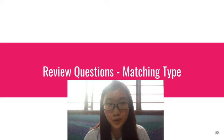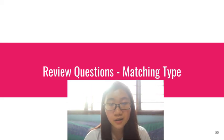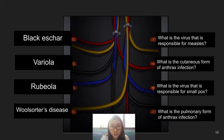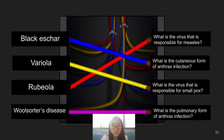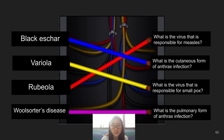We have some review questions. What is the virus responsible for smallpox? It is variola. What is the virus responsible for measles? It is rubeola. What is the cutaneous form of anthrax infection? It is black eschar. And lastly, what is the pulmonary form of anthrax infection? It is woolsorters' disease.